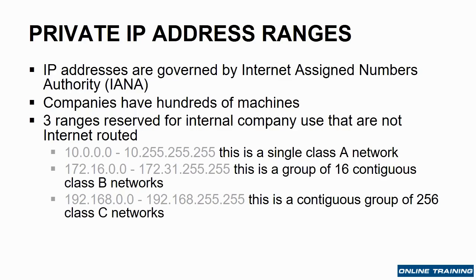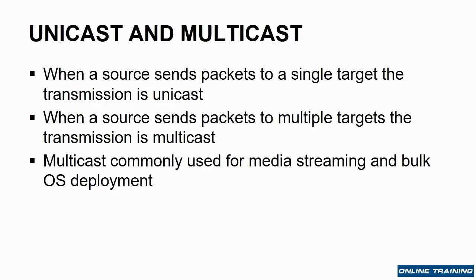Now with all of these, there is unicast and multicast. When a source sends a packet directly to a single target, the transmission is unicast — uni meaning one, there's one target. When a source sends a packet to multiple targets, the transmission is multicast.